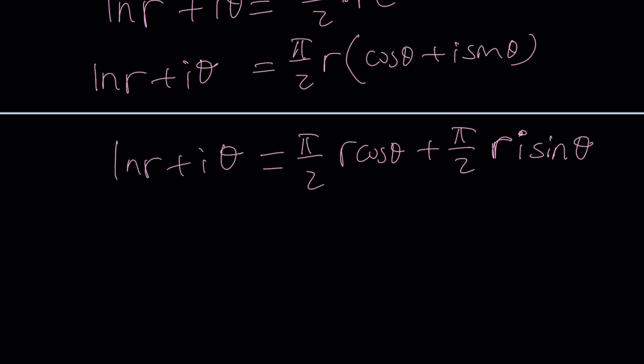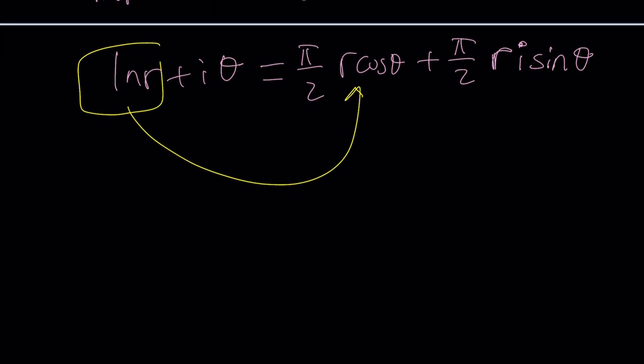So, I'm hoping that the real parts are going to be equal, and that's going to give me a nice equation. Will it? This one equals this. Let's find out. So, ln R equals π over 2R cosine θ, and the other one is iθ, so I'm only going to focus on the coefficient, the imaginary part.